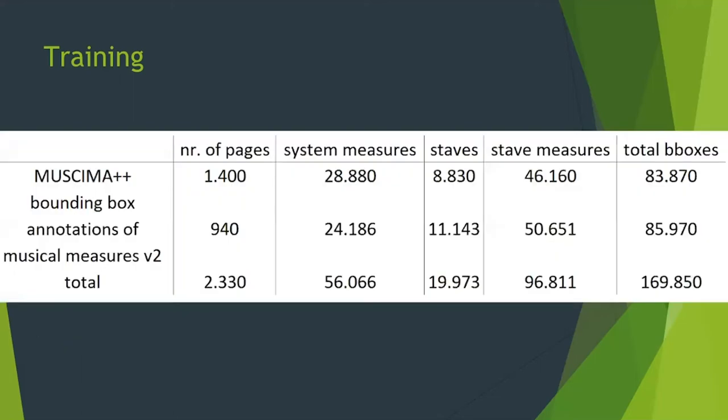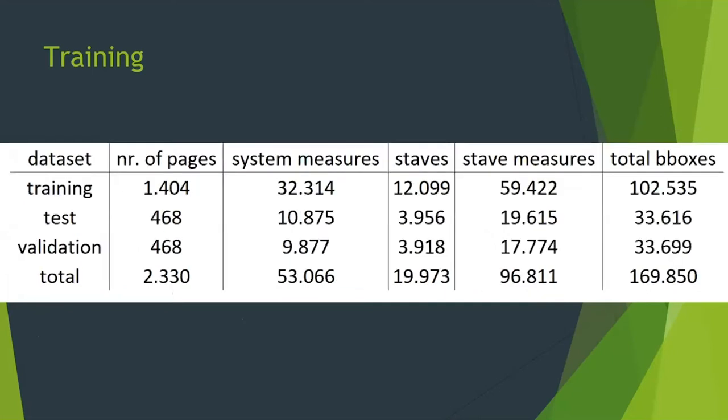These are the numbers for training divided by testing, validation, and total. There's quite a lot - we have roughly 170,000 bounding boxes, which is pretty good.